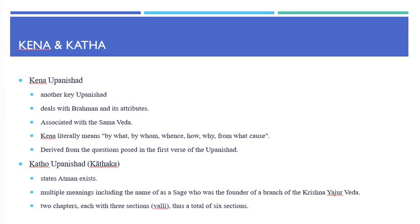The Katha Upanishad, also known as the Kathaka Upanishad, states that Atman exists. It has multiple meanings including the name of a sage who was the founder of a branch of the Krishna Yajurveda. The Katha Upanishad has two chapters, each with three sections or valli, thus a total of six sections.